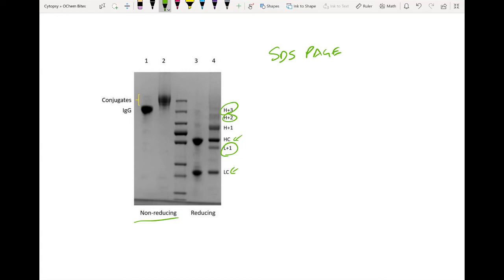When using the non-reducing native page, the information you get is the weight of IgG and the weight of conjugate. And later I'll show you some data that actually shows you how many of the conjugate oligos are on each of those IgGs.